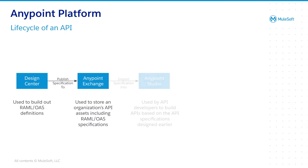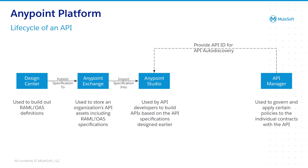After publishing the API specification to AnyPoint Exchange, you will most likely want to start implementing your API. In this step, your developers will search for the specification in AnyPoint Exchange and then import the specification into AnyPoint Studio. In AnyPoint Studio, developers implement the actual API based on the specifications created earlier. Optionally, customers can use API Manager to get an API auto-discovery ID, which they can link into the Mule application, for example if customers want to apply policies to their application.